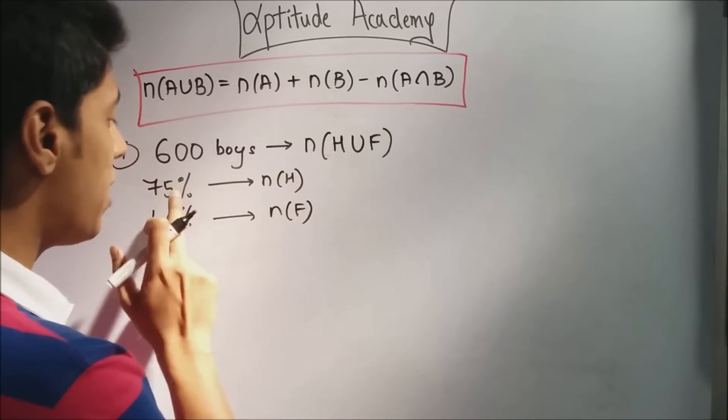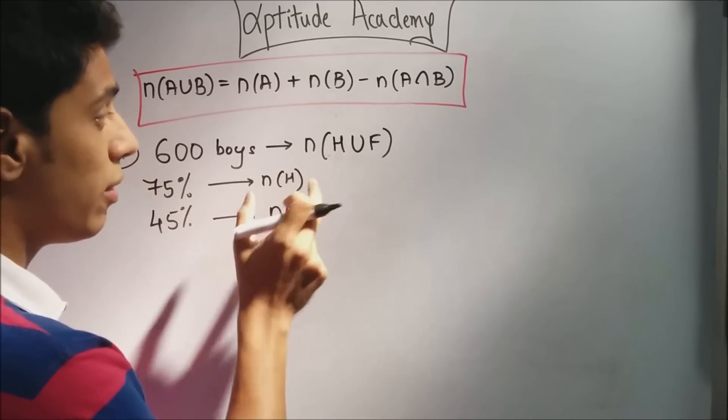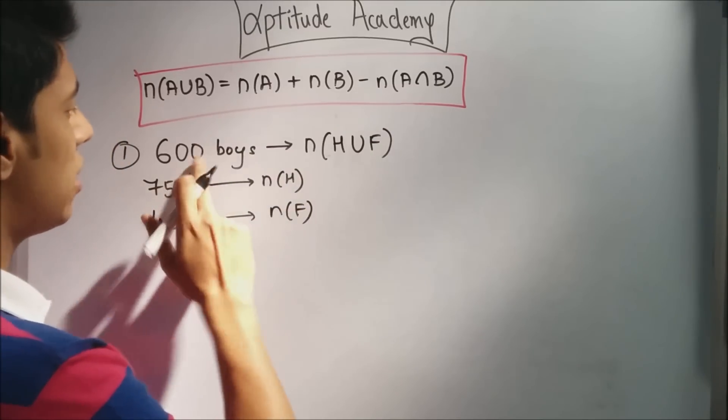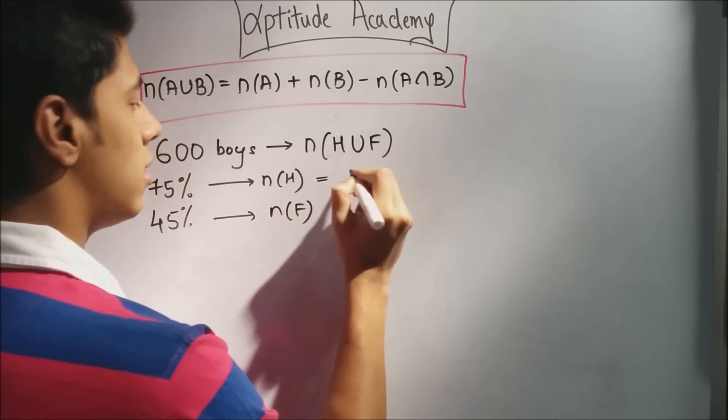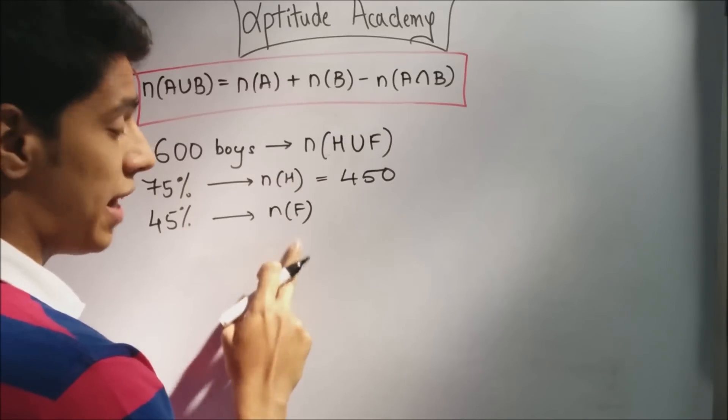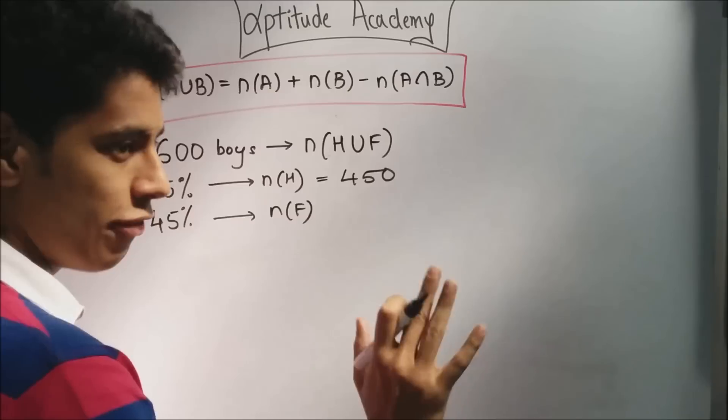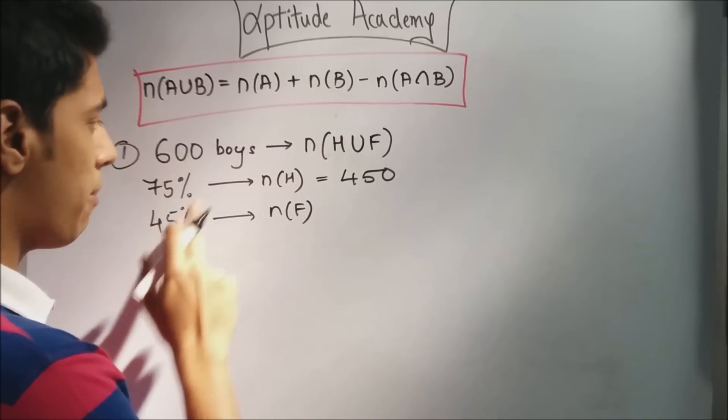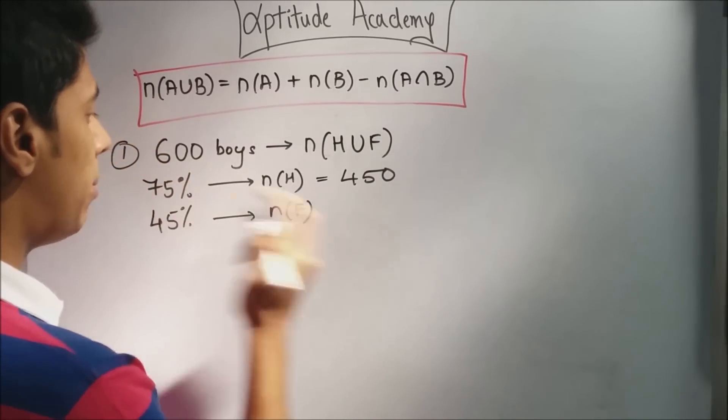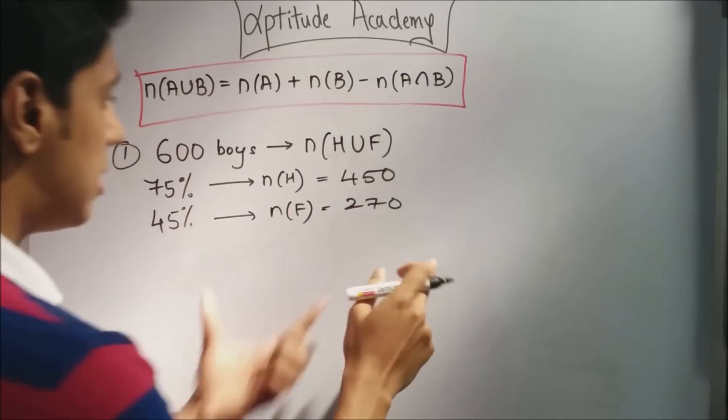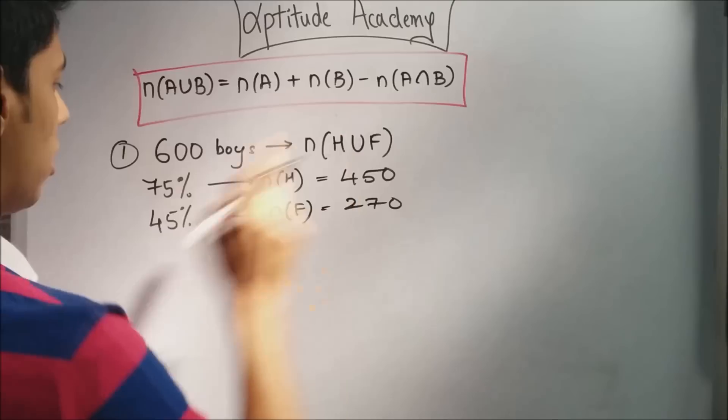Now, they've given you that 75% of them play hockey. Now, they've not said only hockey. They've said hockey. So, n(H) would be 75% of 600. 75% of 600 is 450. Now, n(F), that's the number of people who play football. Not only football. They play football. So, they may play hockey as well. So, n(F) will be 45% of 600. That will be 270. Now, just apply this main rule.